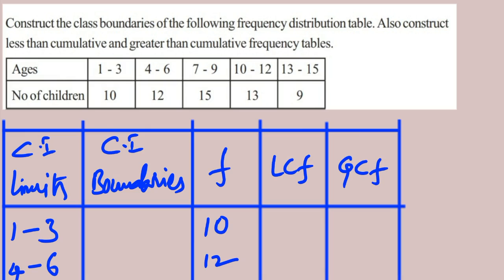In this video I am giving a shortcut: LCF means less than cumulative frequencies, GCF means greater than cumulative frequencies, and F means frequencies, CI means class intervals. We will find these three things, and also if we know LCF or GCF, how can we find the frequencies? All three important topics we are going to learn through three examples.